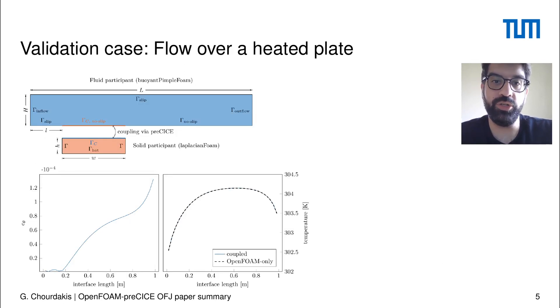In this second validation case, we solve a conjugate heat transfer problem with LaplacianFoam and buoyantPimpleFoam, comparing to chtMultiRegionFoam that solves the complete domain. The partitioned solution shows a temperature distribution very close to the one obtained only with OpenFOAM.